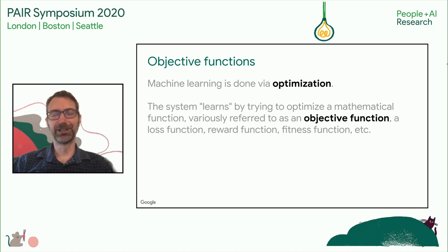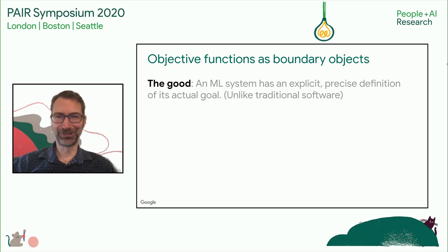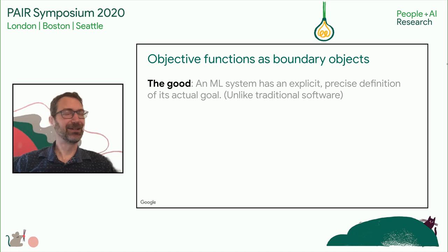Let's talk about how these things can operate as boundary objects in practice. The good part is that a machine learning system has an explicit, precise written definition of its actual goal. This is very unlike traditional software, where one of the big questions about legacy code is: what is it even trying to do? With a machine learning system, you actually do have a fairly concise description of what it's trying to do. That's the good.